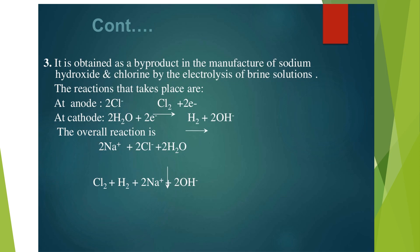It is obtained as a byproduct in the manufacture of sodium hydroxide and chlorine by the electrolysis of brine solution. The reactions are: at anode, 2Cl- converts into Cl2 gas, and at cathode, 2H2O plus 2e- converts into H2 plus 2OH-. The overall reaction is: 2Na+ plus 2Cl- plus 2H2O gives Cl2 plus H2 plus 2Na+ plus 2OH-.